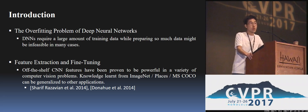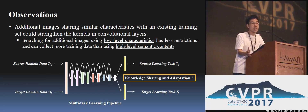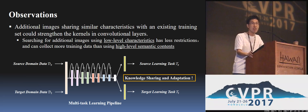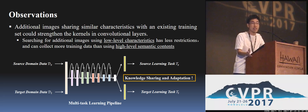Suppose we have a small training set which is not enough for deep learning. Naturally, we would like to add additional images as training data. Such additional images should share similar characteristics with those in the existing training set. Then these additional images can make convolutional kernels in neural networks much more powerful and discriminative. Here, we emphasize low-level characteristics because they can collect much more images than using high-level contents.